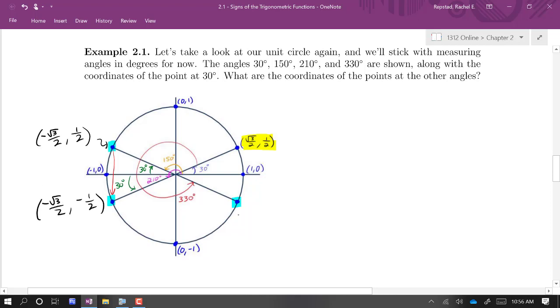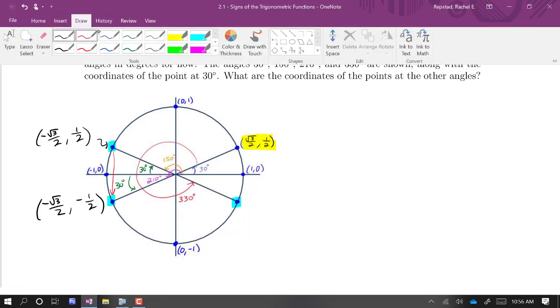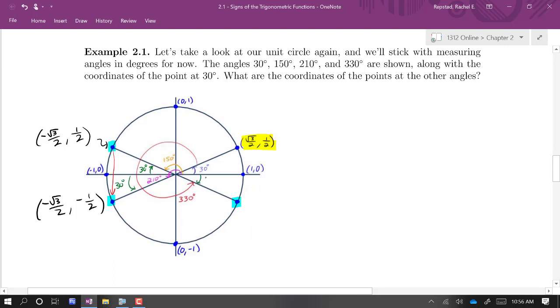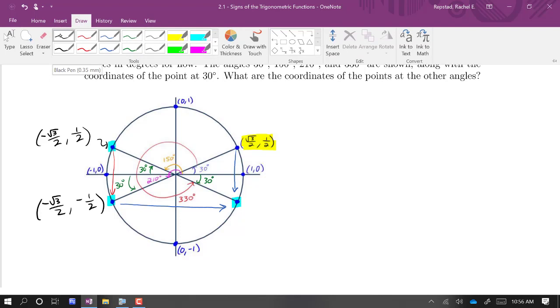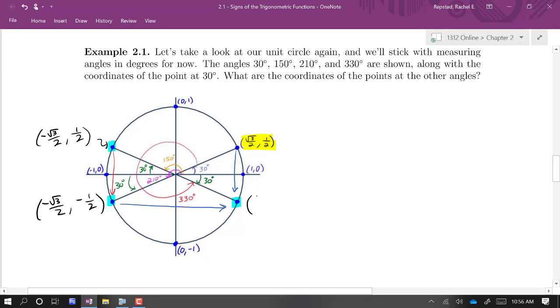And then finally, over here in the fourth quadrant, we can see this. This is 330 degrees, and that is 30 degrees below the x-axis in the fourth quadrant. And we can get these coordinates by using the fact that it's got to be the reflection across the x-axis of this point, or equivalently, you could think of it as the reflection across the y-axis of that point. Either way, we'll find that it's got this positive root 3 over 2 x coordinate, and a negative 1 half y coordinate.